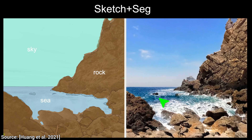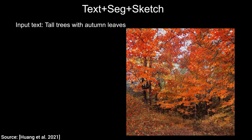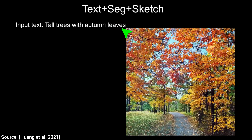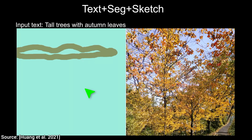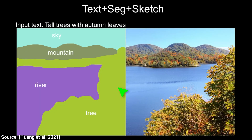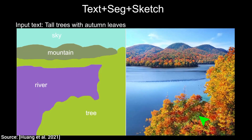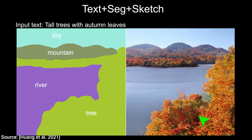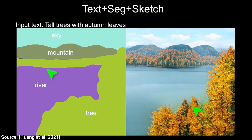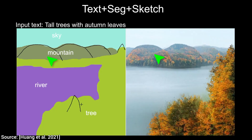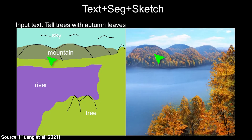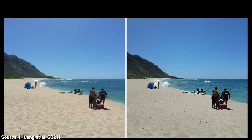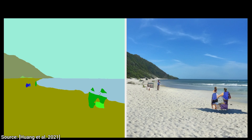Or, better, if we know in advance that we are looking for tall trees and autumn leaves, we can even start with the art direction. And then, when we add our labels, they will be satisfied — we can have our river — but the trees and the leaves will always be there. Finally, we can sketch on top of this to have additional control over the hills and clouds. And get this, we can even edit real images.